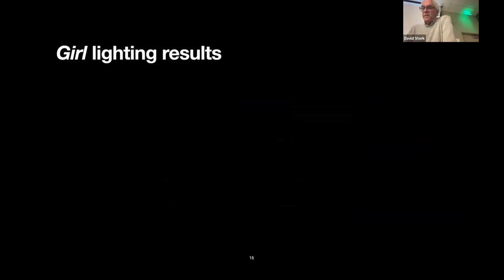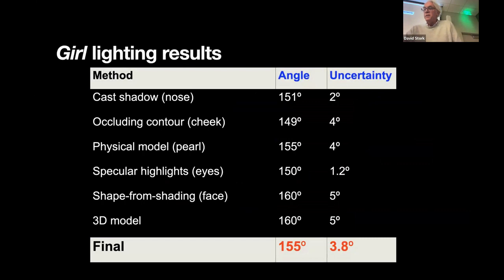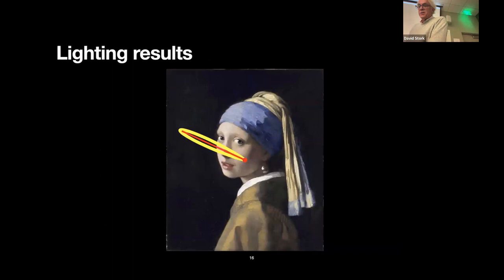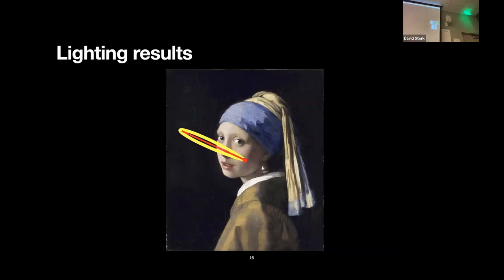Here are our results. The best estimate to the direction of the illumination is 150 degrees, but what is important is the very small uncertainty or standard deviation of the estimates — they all agree incredibly well. Here's one way to visualize the results: the red line points at 155 degrees, and the yellow cardioid curve tells us the relative probability of finding the light in a given direction. The fact that the yellow cardioid is stretched out shows the remarkable agreement among the estimates.